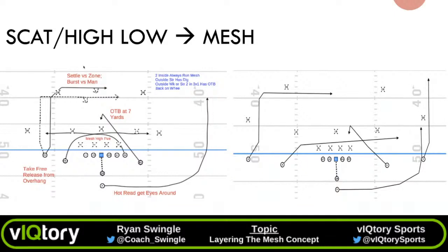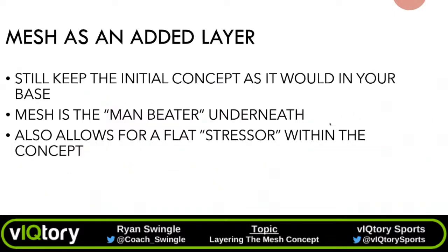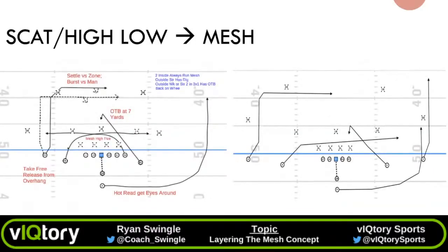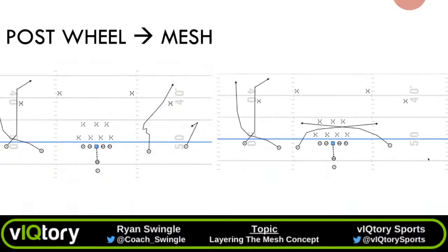Looking at how we can translate from a scat or high-low concept to the Mesh — on the right side, it's a simple high-low: you're getting the dig with the spot route over the center at seven yards, and in a three-by-one set the back just works into the flat. Now adding the Mesh tag, the two inside guys run the mesh routes. Number one now has the sit or spot route, and the back out of the backfield — or if you go empty, the first receiver to the trip side — runs either the wheel or a takeoff route. That was the mesh staple I learned in college, and now we're adapting it to any concept.